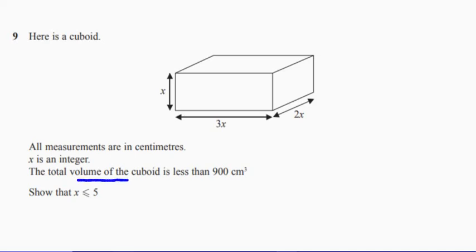We're told the total volume of the cuboid is less than 900 centimeters cubed. So all we need to do is think, well, how do you work out the volume? Well, the volume is just these dimensions multiplied together.